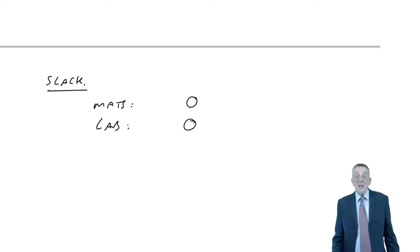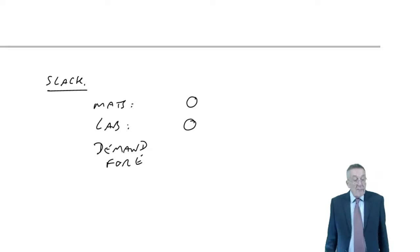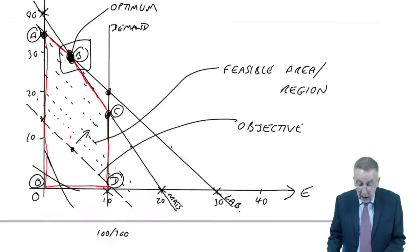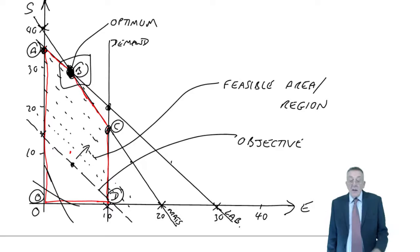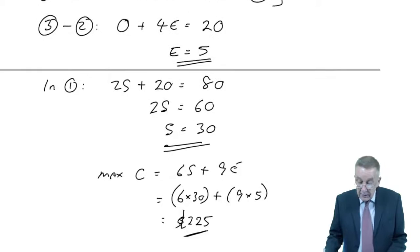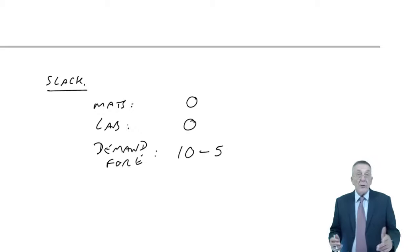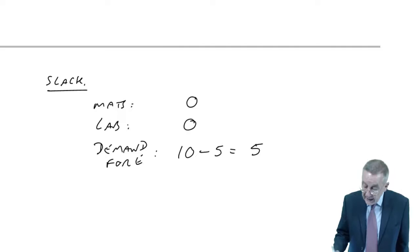The third constraint was the demand for E. The maximum was 10. Are we producing 10, or is there spare demand? Of course, no, we're not. The demand line is there, and yet our optimum is only here. We're producing five. So demand, we could have sold 10, we're only producing five, so there is slack at five units.